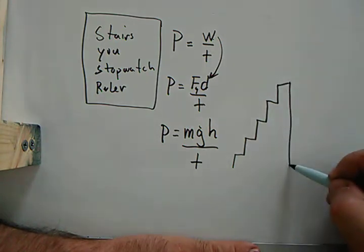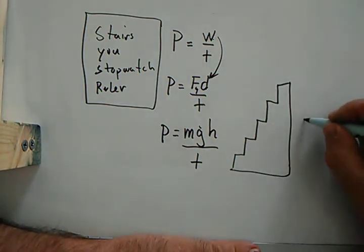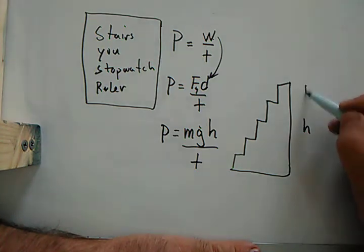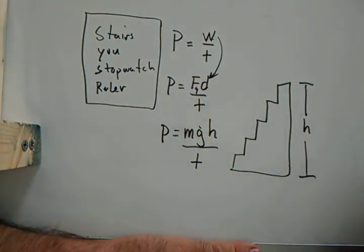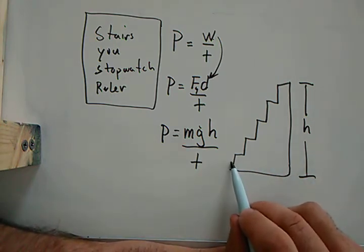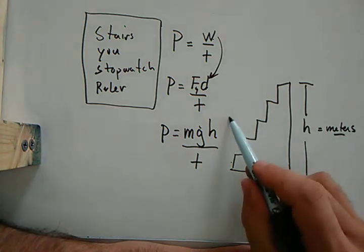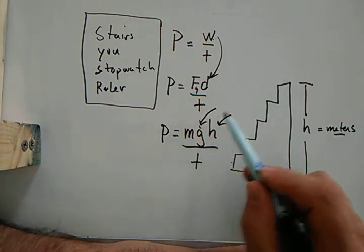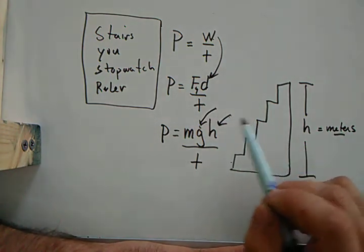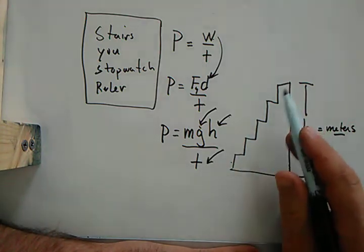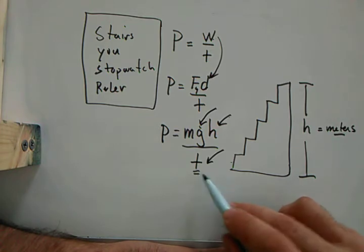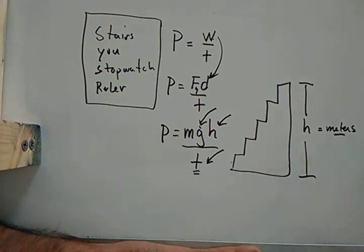Okay, so what you're going to do is you're going to be measuring the height, the h, of a staircase. Now what I would do is just measure one and then multiply it by the number. It's going to be in meters. Height in meters. That gives you the h portion of this whole deal. You know what g is already, right? G is 9.8. Do you know how long it takes you to climb the stairs? Yes, but you've got to do it in seconds and it's got to be done with the stopwatch.